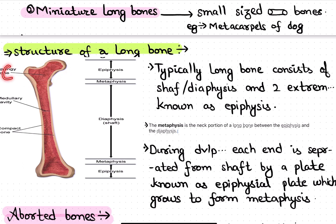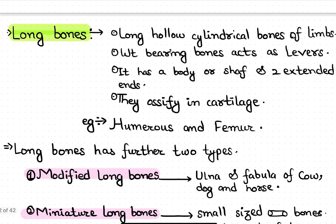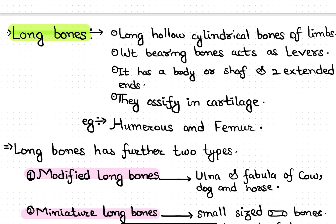In the epiphysis we generally find spongy bone, while the shaft has a medullary cavity surrounded by compact bone. An important point is that long bones generally ossify in cartilage, meaning they were originally cartilage and with time changed into compact bone. Examples are the humerus in the arm and the femur in the leg.